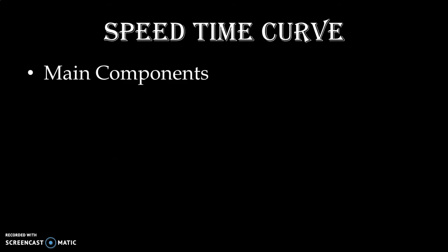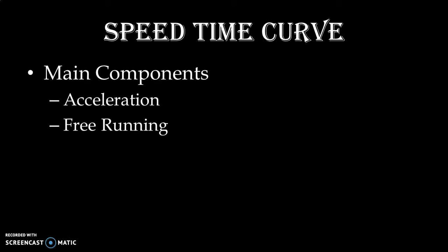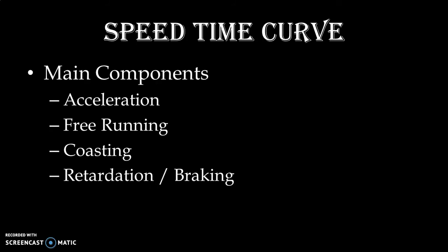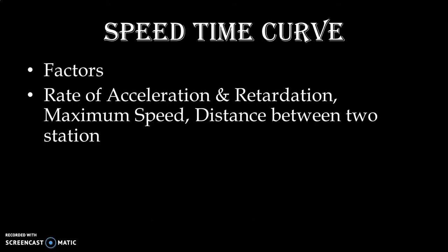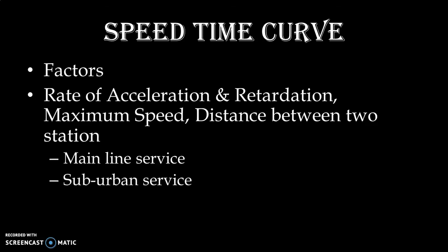In the speed-time curve we have four main components: acceleration, free running, coasting, and retardation or braking. Based on certain factors like rate of acceleration and retardation, maximum speed, and distance between two stations, we categorize different train services like mainline service, sub-urban service, and urban service. In this video lecture we will do the analysis of mainline service.